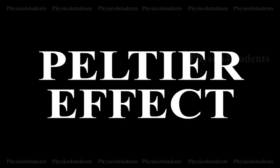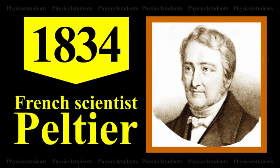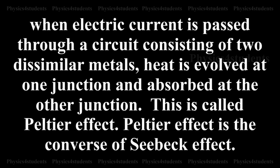Peltier Effect. In 1834, a French scientist Peltier discovered that when electric current is passed through a circuit consisting of two dissimilar metals, heat is evolved at one junction and absorbed at the other junction. This is called Peltier Effect.